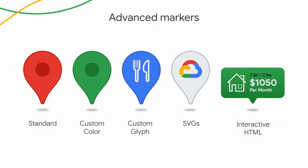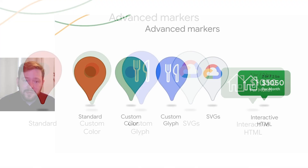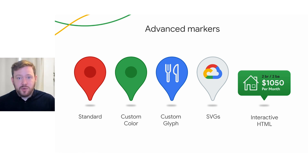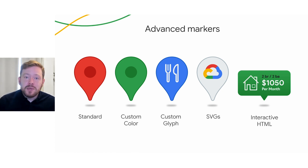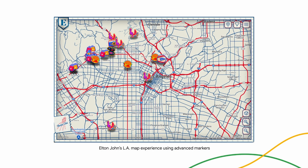Next, let's chat about the general availability launch of advanced markers. Until now, it's been hard to customize the look and feel of markers on a map while keeping map load times down and benefiting from critical functionality like collision management. But with advanced markers, you can easily create custom markers with your own glyphs, SVGs, or custom HTML and CSS, and implement them at scale while keeping your map super-performant. During preview, we saw tons of customers use advanced markers to really flex on their brand. One great example is Rocket Entertainment, who used advanced markers to create an immersive maps experience for Los Angeles to celebrate Sir Elton John's final North American tour.